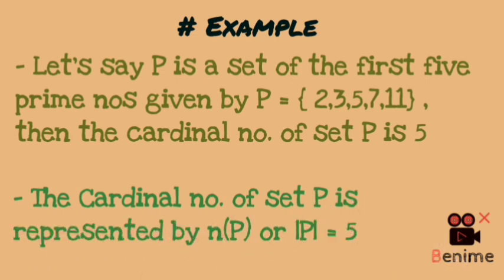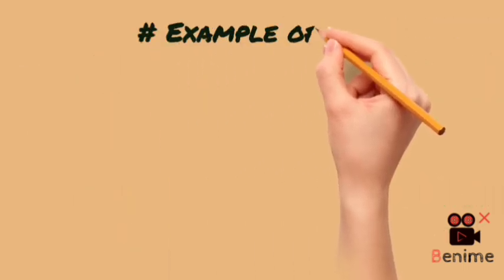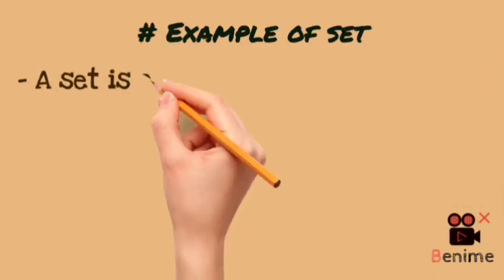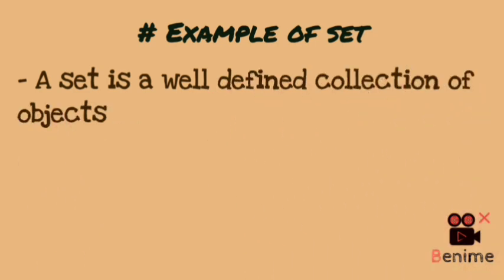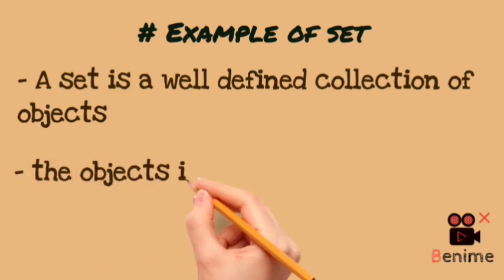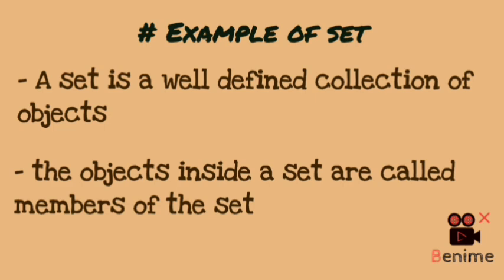The cardinal number of set P is represented as |P|. This is the symbol for the cardinality of P. To recap: a set is a well-defined collection of objects. The items in a set are called elements, members, or objects. Now I will give you some more examples so that you can understand clearly.